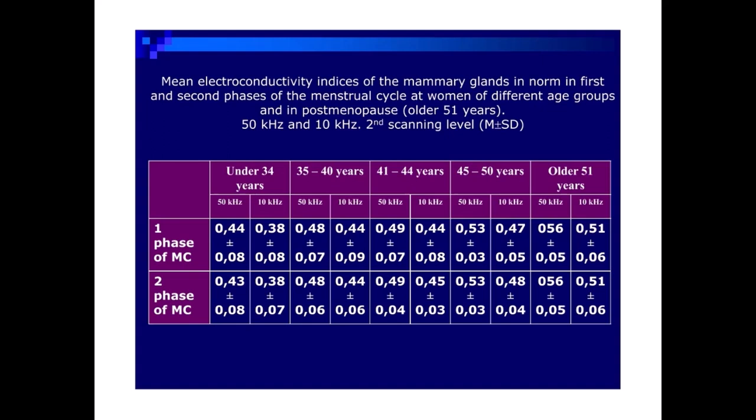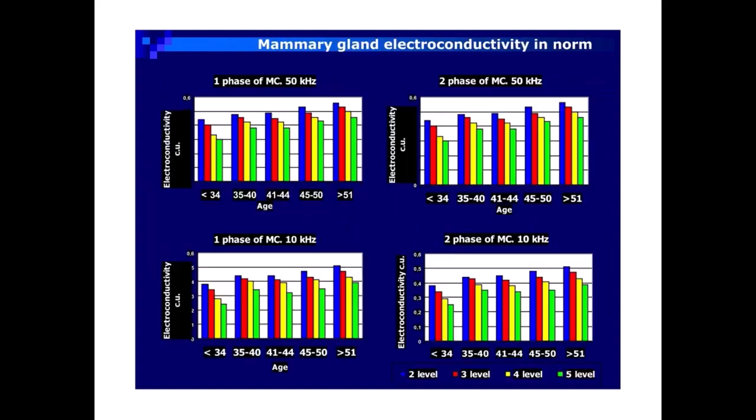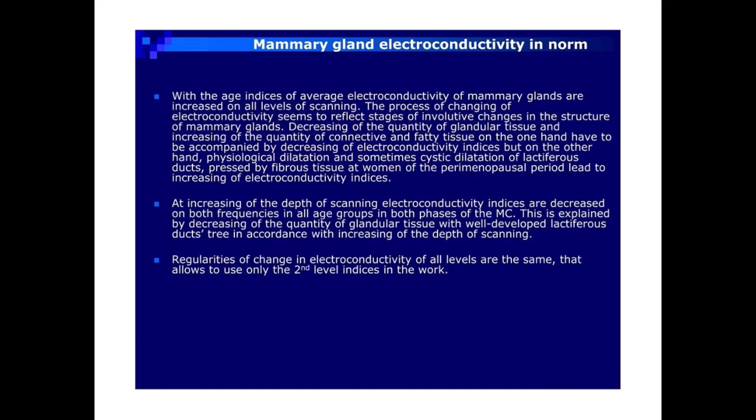Mean electroconductivity indices of the mammary glands in norm in the first and second phases of the menstrual cycle at women of different age groups and in postmenopause — older than 51 years — at 50 kHz and 10 kHz, second scanning level, plus or minus SD.